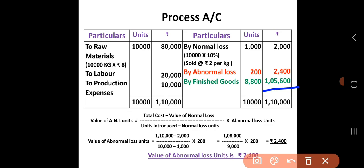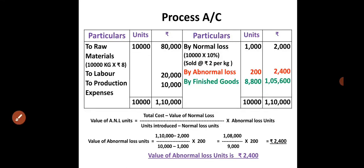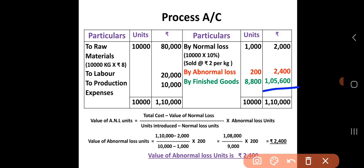To recap: first, debit raw materials, labor, and production expenses. Then calculate normal loss units and its value at the scrap rate. Enter finished goods units. Find the difference to get abnormal loss units. Calculate the value of abnormal loss using the formula. Finally, find the value of finished goods as the balancing figure.